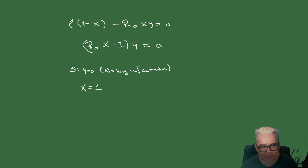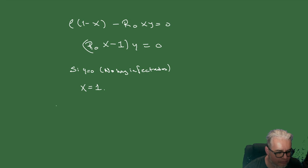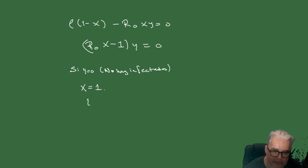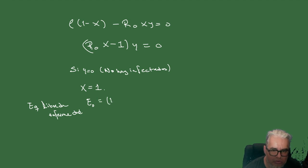La población está completamente normalizada. Entonces E0 = (1, 0) es el equilibrio libre de enfermedad.